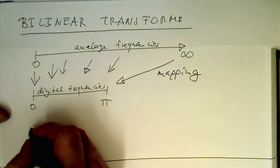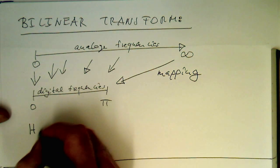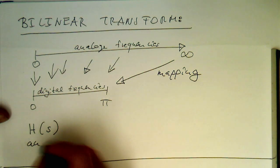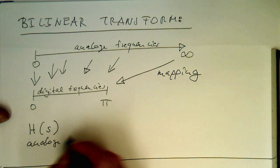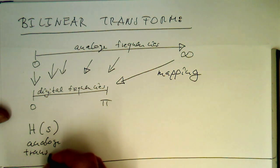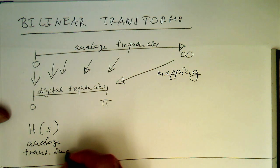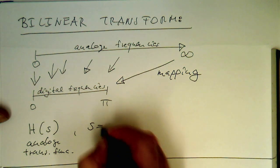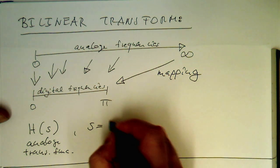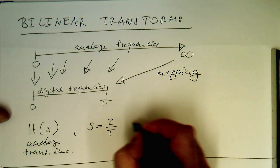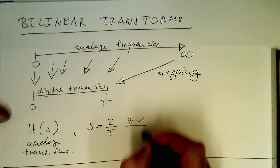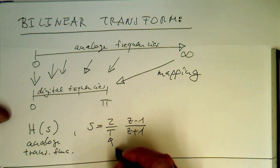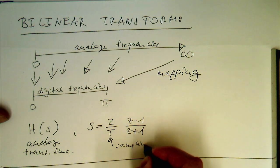And the way how this is done is very, very easy. So if we have a function h of s, our analog transfer function, then what we do is we just say that s is 2 divided by t, our sampling interval, z minus 1 divided by z plus 1. So that's the sampling interval.